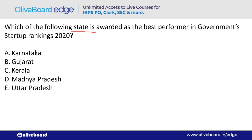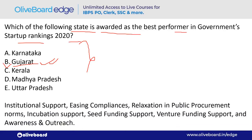Which state is awarded as the best performer in government startup rankings 2020? The answer is Gujarat — option B. Gujarat was ranked on 7 parameters: institutional support, easing compliances, relaxation of public procurement norms, incubation support, seeding funding support, venture funding support, and awareness and outreach.